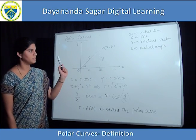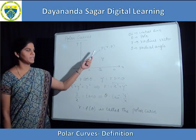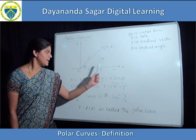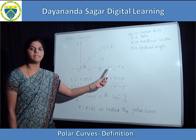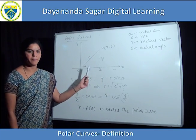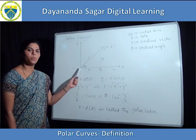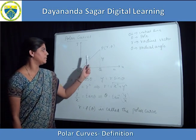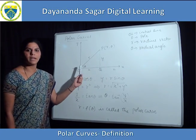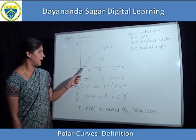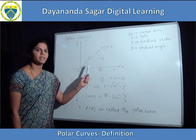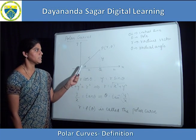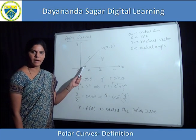Let us know what are polar curves. Now let us consider a point P in the xy plane. The x-axis is also called as the initial line. The origin O is called as the pole. Then join OP. This OP is called as the radius vector, and the angle between the radius vector and the initial line is nothing but theta. This theta is also called as the radial angle.